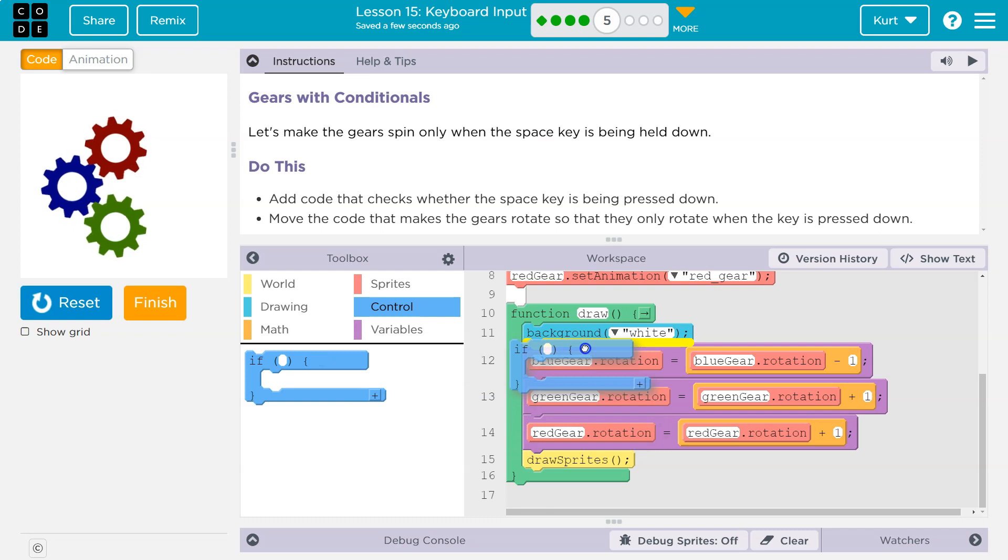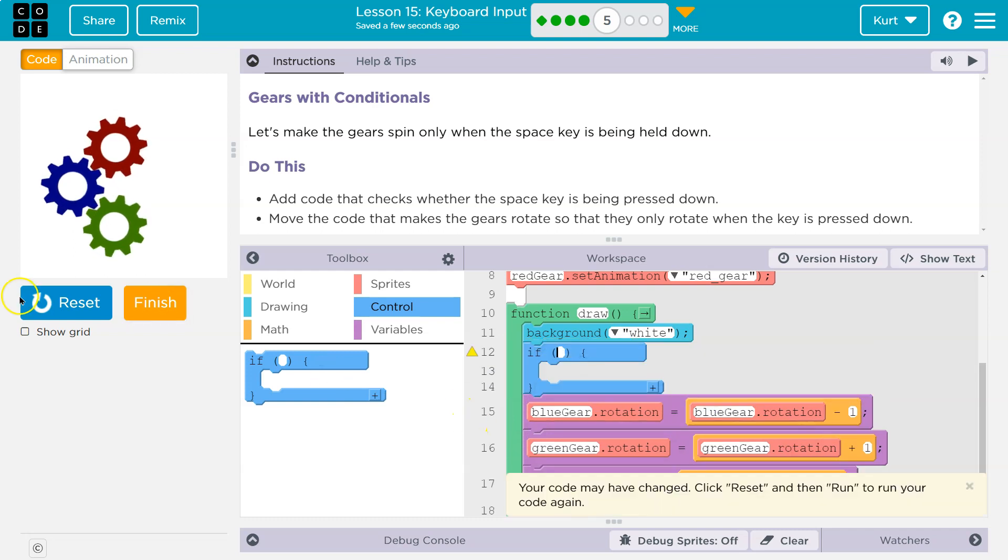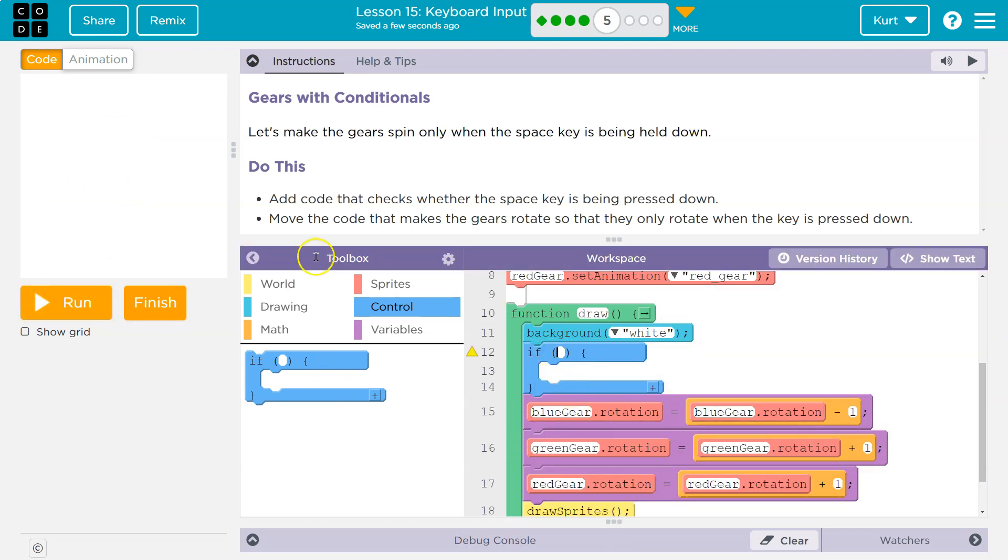So I'm going to use an if because we're checking it. Now, what do I want to know? I want to know if add code that checks whether the space key is down.